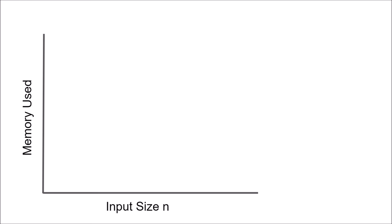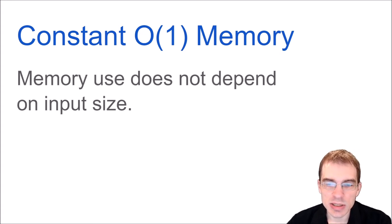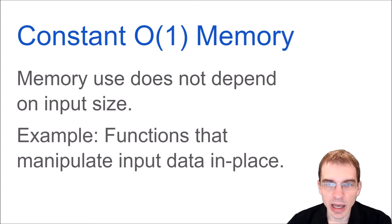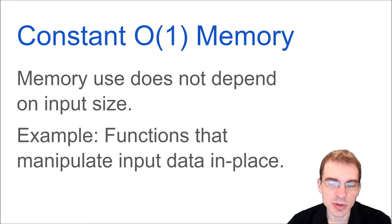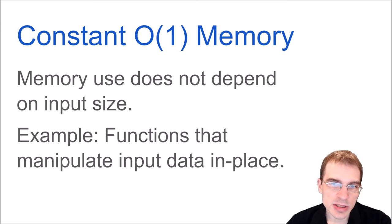The absolute best memory complexity is something that requires constant space. A function that requires constant memory, also known as O(1), is something where the memory use does not depend on the size of the input. An example of that is functions that manipulate the input data in place — basically, when a function is given some input sequence, say an array, it manipulates the data in that array where it exists in memory without actually saving that array to any new variable and using up additional memory. So instead of putting something new into working memory, it's just manipulating the input data itself — not using up any new memory.